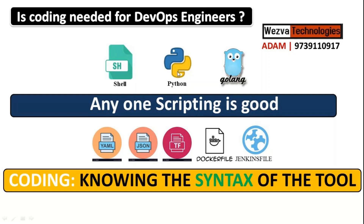As a DevOps engineer, you should be aware of at least one scripting language. If you are a beginner, start with Shell. If you already know programming like C or Java, you can pick up Python, Java, or Go. The focus is that at some level, depending on complexity, there might be a script you have to write — even if it's two to four lines. Knowing one scripting language is sufficient, but it is not mandatory.